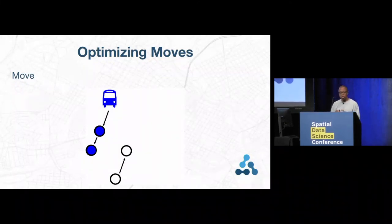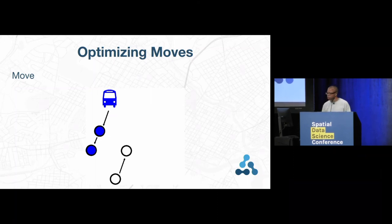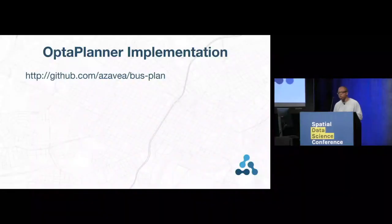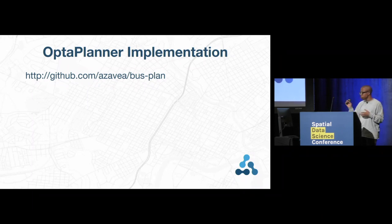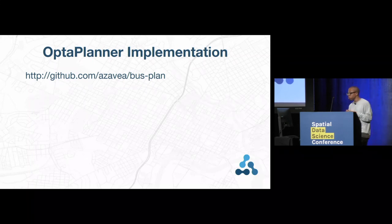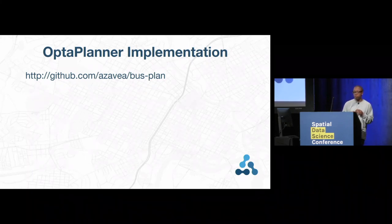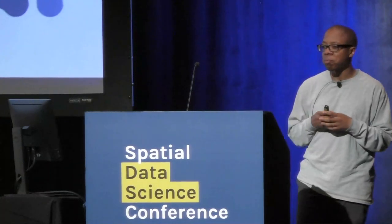We used an open source piece of software called OptiPlanner to accomplish this. All of this work was open source and was done with open source data to the extent possible. You can visit the repo shown here to examine the work if you like. It's based on the open source OptiPlanner framework; we used the open source OpenTrip Planner; and we used open source road data. The student data, of course, are private. Thank you.